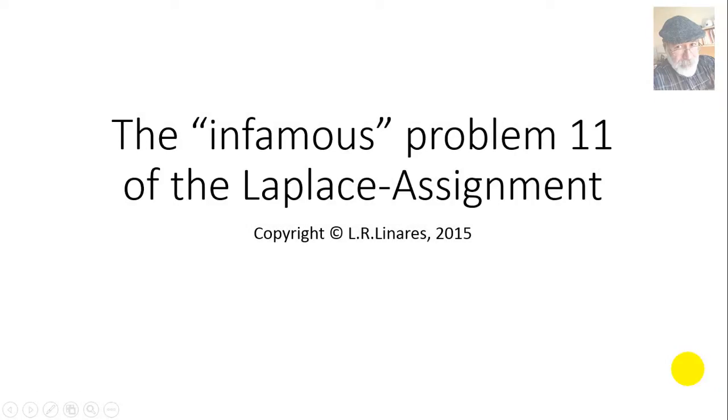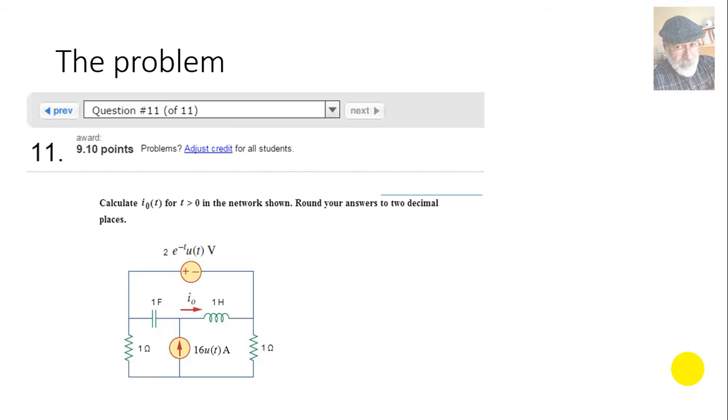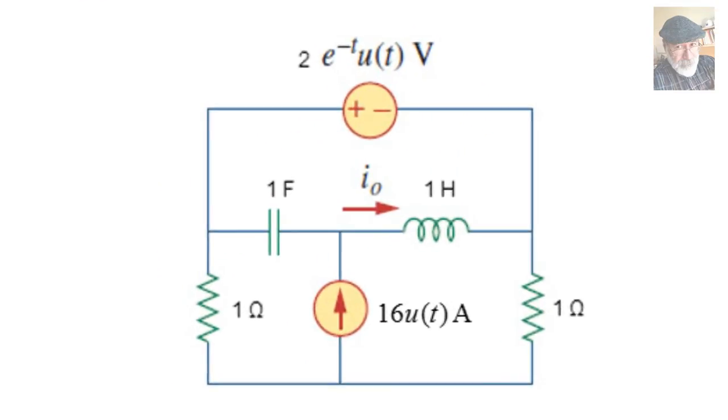Let's talk about the infamous problem 11 of the Laplace transform assignment. This exercise has a closer look at it. In it, two sources - this exponential one at the top, a voltage source, and this constant 16A current source - energize a circuit with four passive elements, two reactive ones.